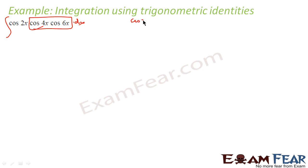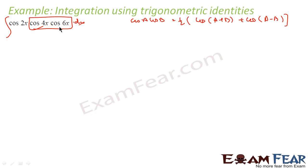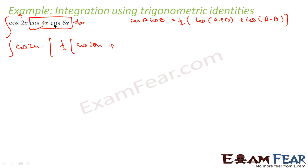We know that cos·a·cos·b is nothing but ½(cos(a+b) + cos(a-b)). I am taking the cos 4x and cos 6x parts because cos 2x I can anyway convert into simple form; these two are a little difficult. So this becomes cos 2x times ½[cos(4+6)x + cos(4-6)x], that is cos 10x + cos(-2x).